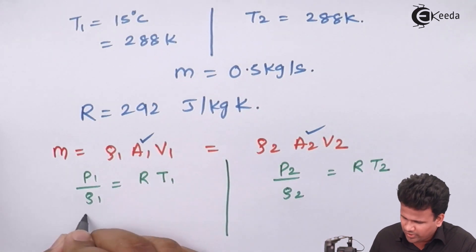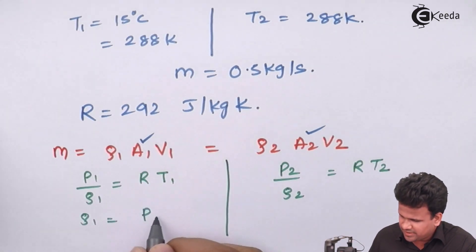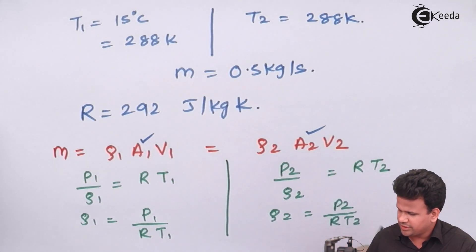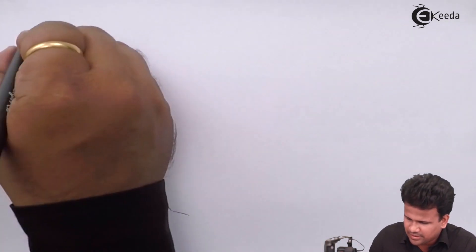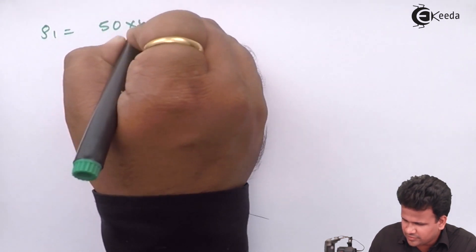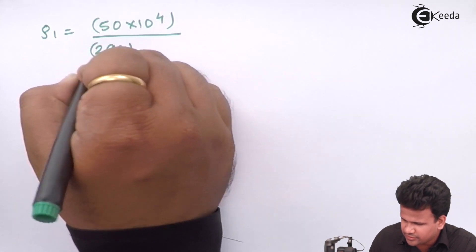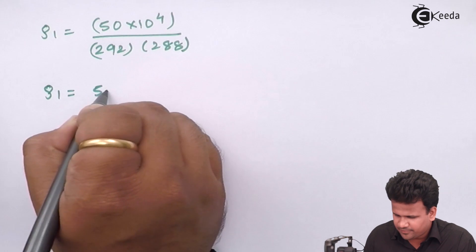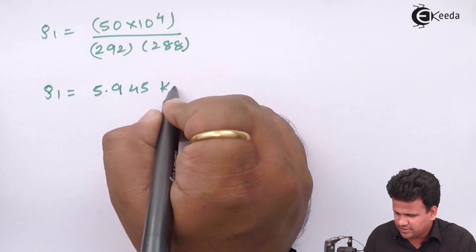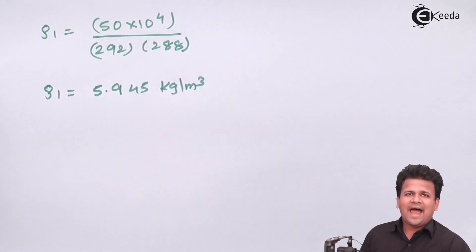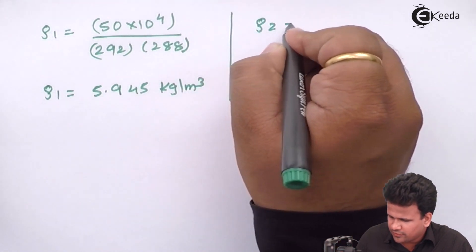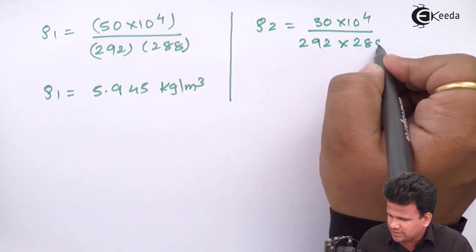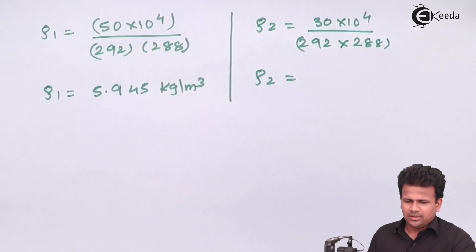Let us evaluate rho1: rho1 equals p1 divided by R × T1. Substituting values: rho1 equals 50 × 10⁴ divided by 292 × 288. On calculation, rho1 equals 5.945 kg per meter cube.